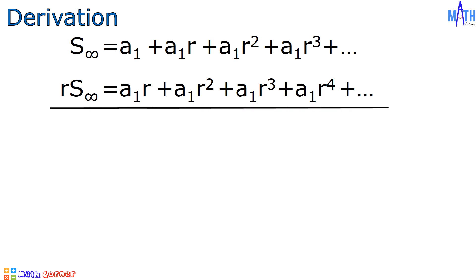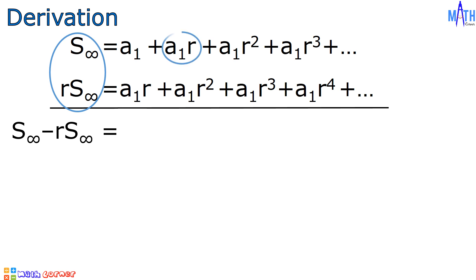Let us subtract these two equations. On the left side of the equation, we have sum to infinity minus r times sum to infinity. If we subtract a sub 1 times r and a sub 1 times r, the answer is zero. A sub 1 times r squared minus a sub 1 times r squared is also equal to zero.